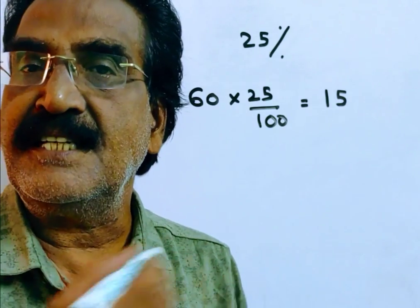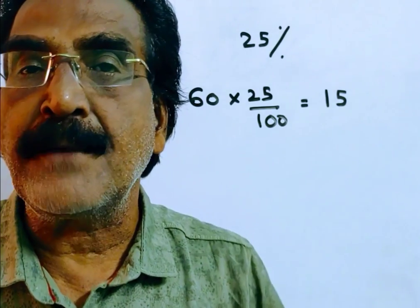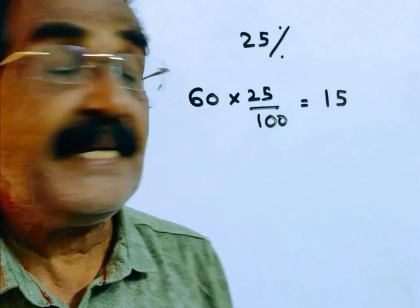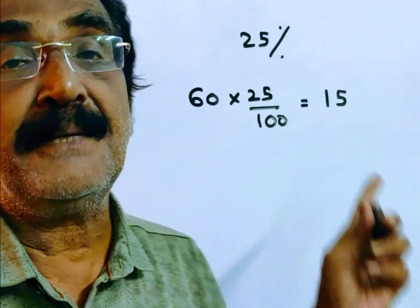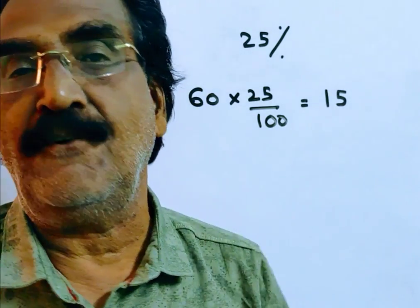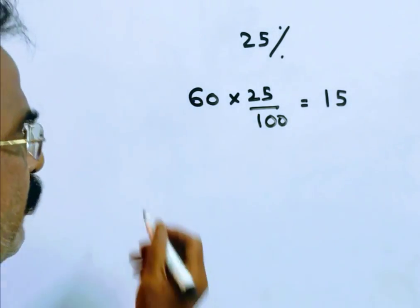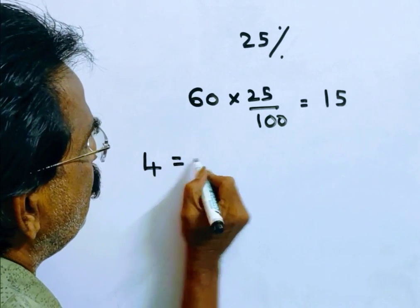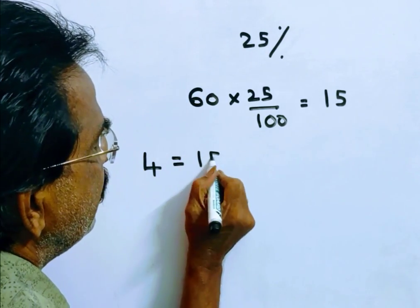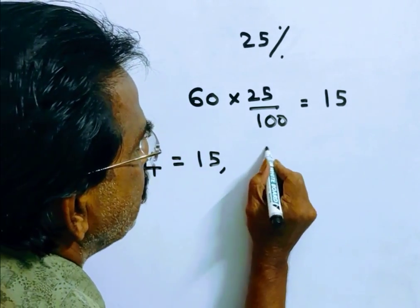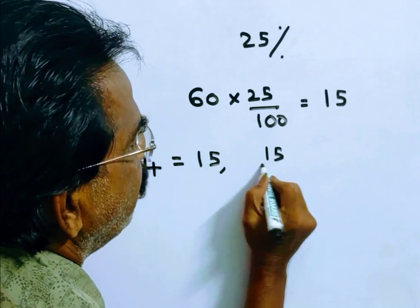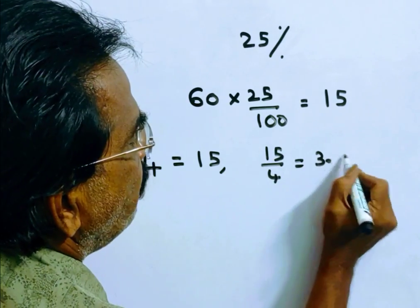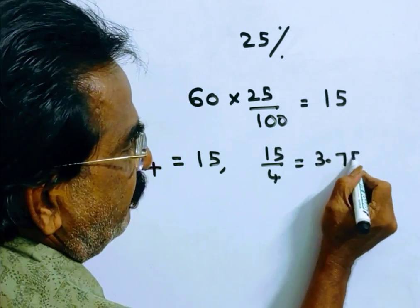Because of this reduction, I am able to get 4 more mangoes. That means this Rs. 15 is the reduced price of 4 mangoes. So, 4 mangoes is equal to Rs. 15. Now, each mango is 15 divided by 4, which is equal to Rs. 3.75.